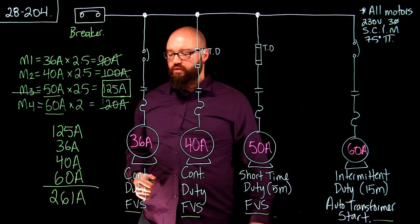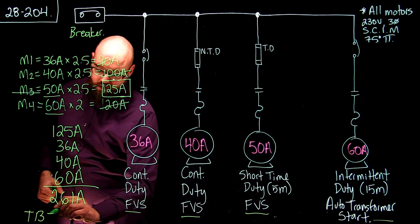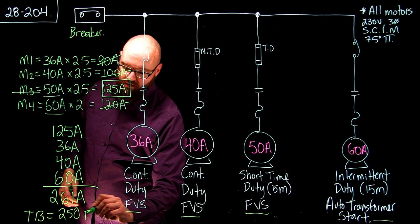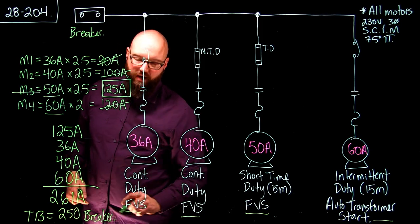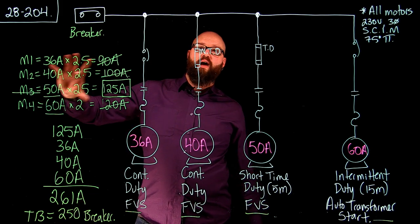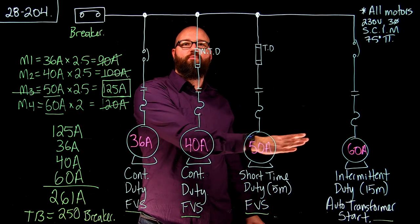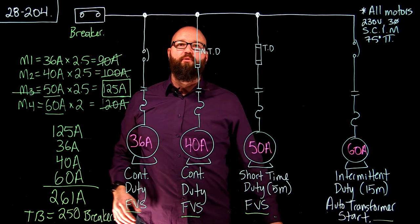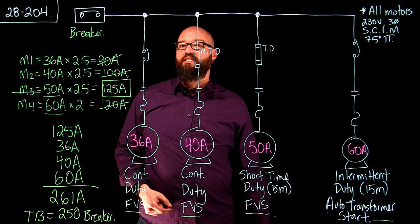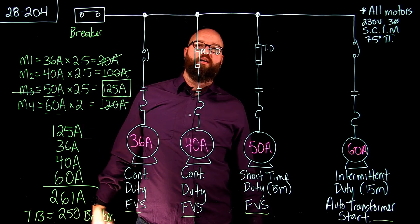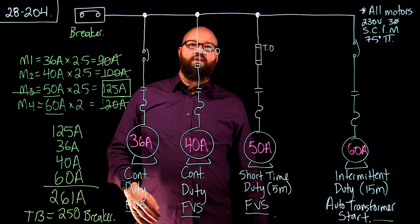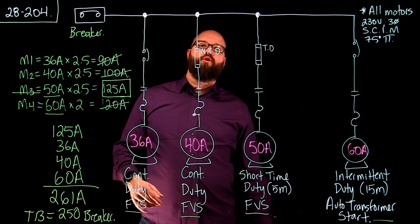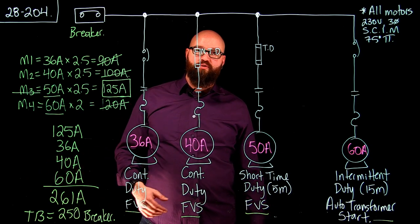Rule 28.204 tells me I cannot exceed this value, so we're going to go to Table 13. To protect this entire bank of motors, we're going to select a 250-amp breaker. To recap: calculate the value for each individual motor based on the main overcurrent protection type using Table 29. Take the highest calculated value, disregard the rest, add the remaining FLAs, and that gives the maximum setting. Then pick the overcurrent device going down to the next available size.